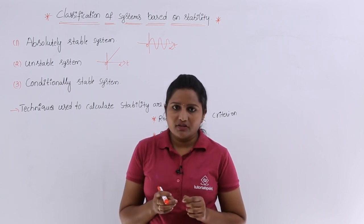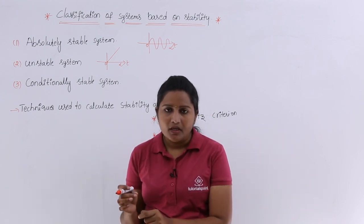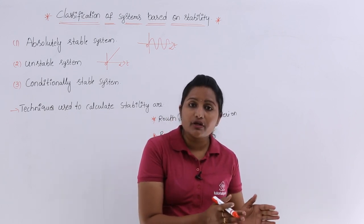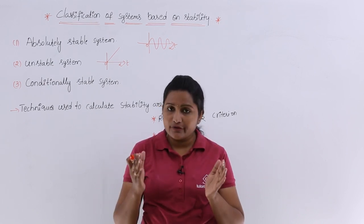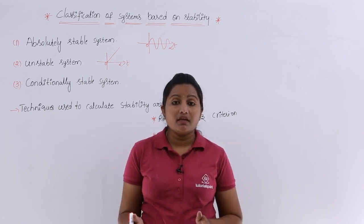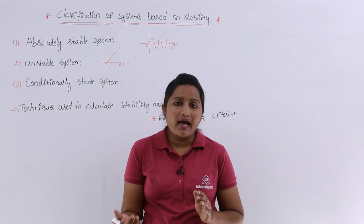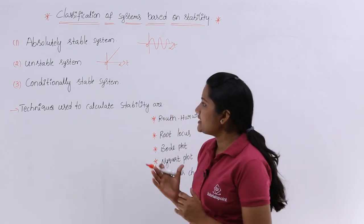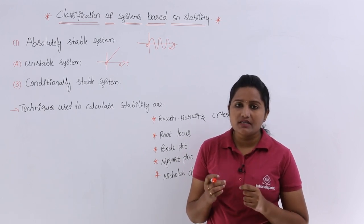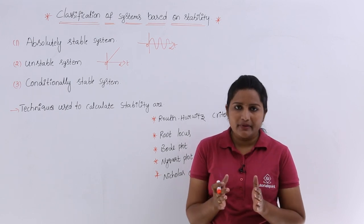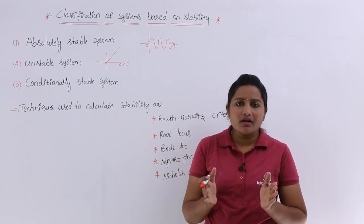For all its parameter variation, for example if the system parameters are going to vary from 0 to infinity, if your system is producing finite output for the limited duration of that variation, then you can say that is a conditionally stable system. After that limited period, your system may be producing unbounded output. So conditionally stable system means: for all variation of its parameters, if your system is producing finite output for the limited period, then you can say that is conditionally stable within those particular limits.